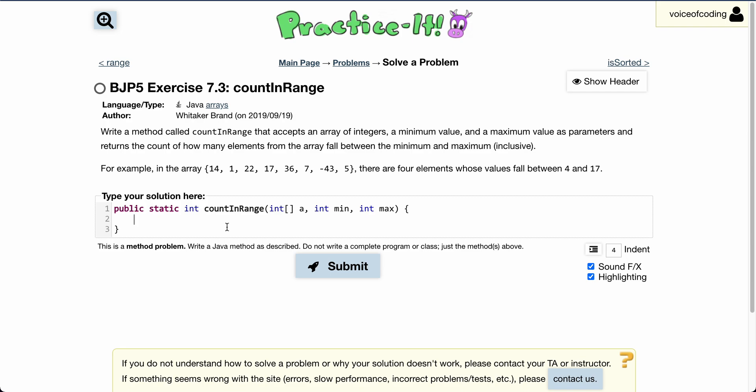For example, in the array 14, 1, 22, 17, 36, 7, negative 43, 5, there are four elements whose values fall between 4 and 17.